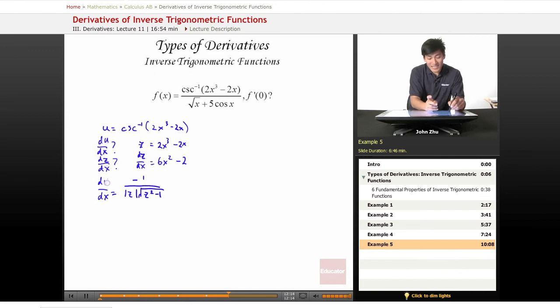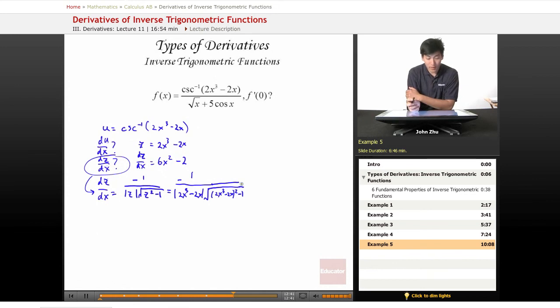Well, our dz dx is this term. And we replace this by negative 1 over the absolute value of z is 2x cubed minus 2x times the square root of z squared, 2x cubed minus 2x squared minus 1. And there we have this full expression with only the variable x in it. So this is the derivative of our cosecant inverse term.